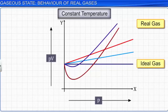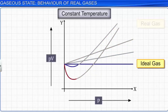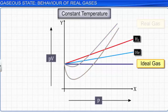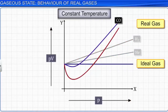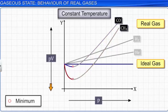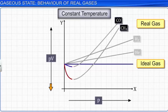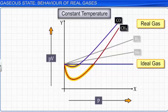When we draw a plot between PV and P for these gases, we get two types of curves. The curves for hydrogen and helium lie above the ideal gas curve and show a continuous increase in PV with increase in pressure. Whereas for other gases such as carbon monoxide and methane, the PV value first decreases with increase in pressure and reaches a minimum, then increases with increase in pressure so that it crosses the straight line of the ideal gas. Thus, a negative deviation is observed initially in the curve, followed by a positive deviation as shown in the graph.